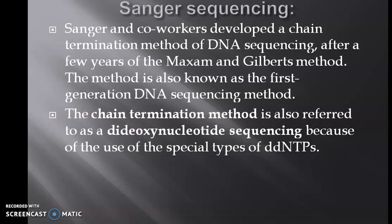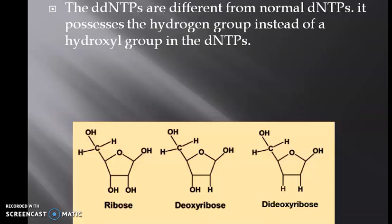The ddNTPs are different from normal dNTPs, that is deoxynucleotide phosphates, because it possesses the hydrogen group instead of a hydroxyl group in the dNTPs. You can see the difference between ribose, deoxyribose and dideoxyribose. In ribose both hydroxyl groups are present, whereas in deoxyribose one hydroxyl group is absent, whereas in dideoxyribose both hydroxyl groups are absent.